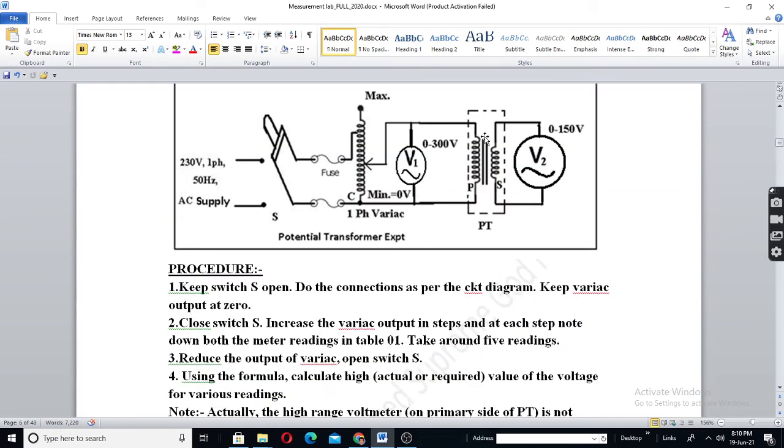So, suppose here number of turns is 1, 2, 3, 4, 5, 6, 7, 8. Here it should be 4. 1, 2, 3, 4, 5. If possible, you can draw only 4 turns. Anyhow, don't bother so much. But primary number of turns should be more than secondary.